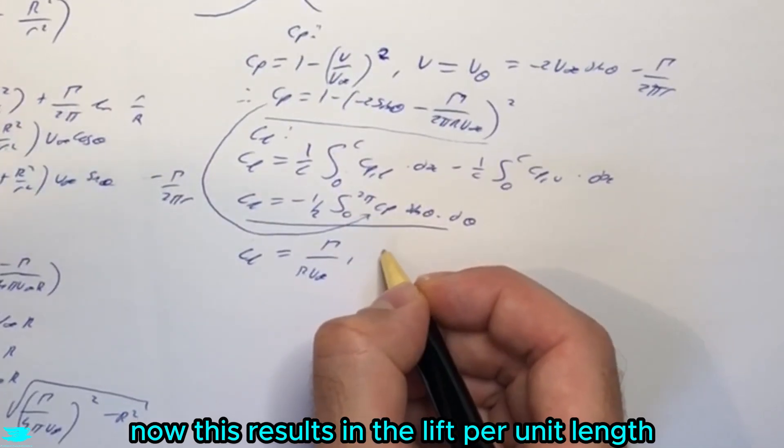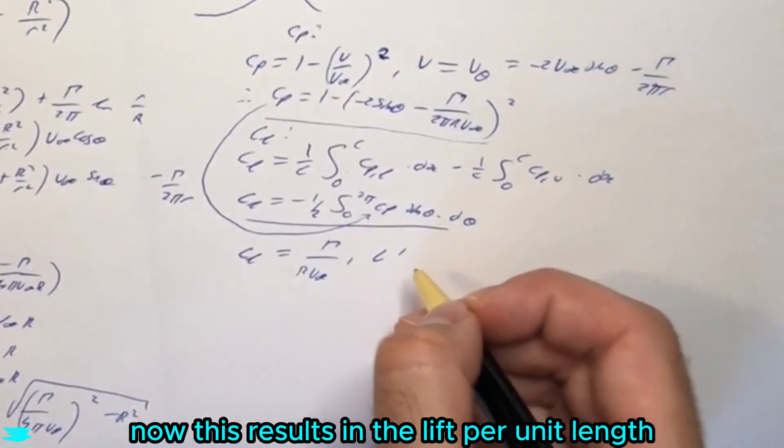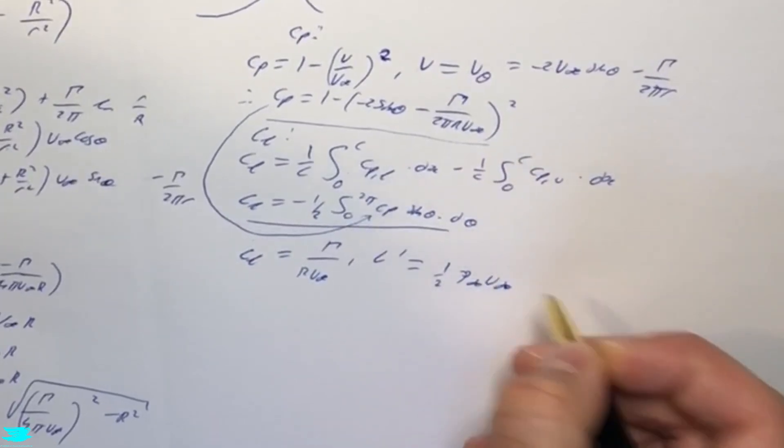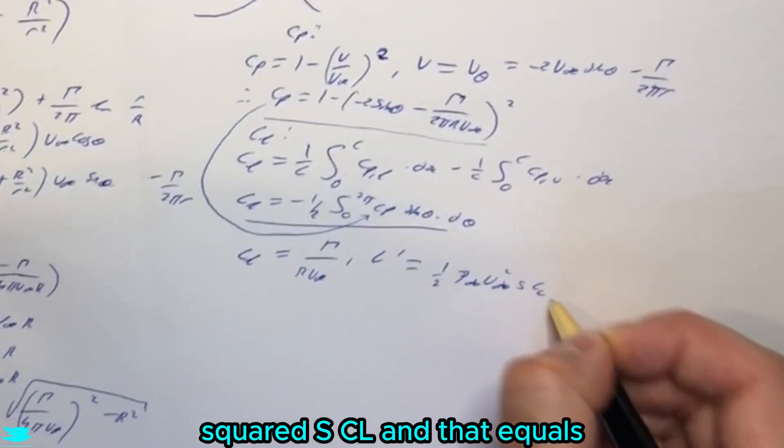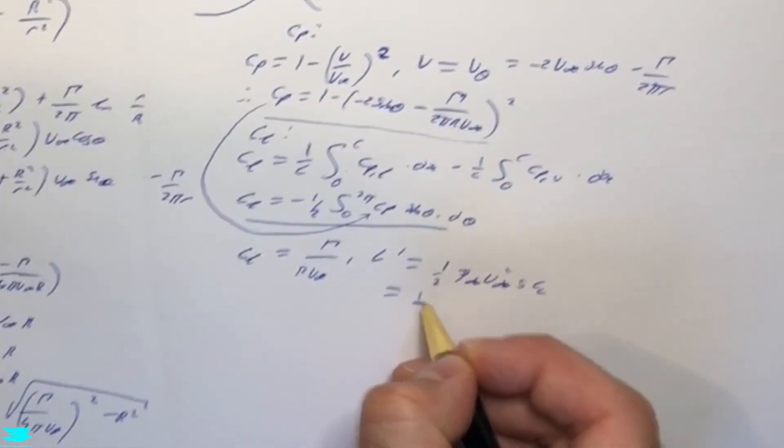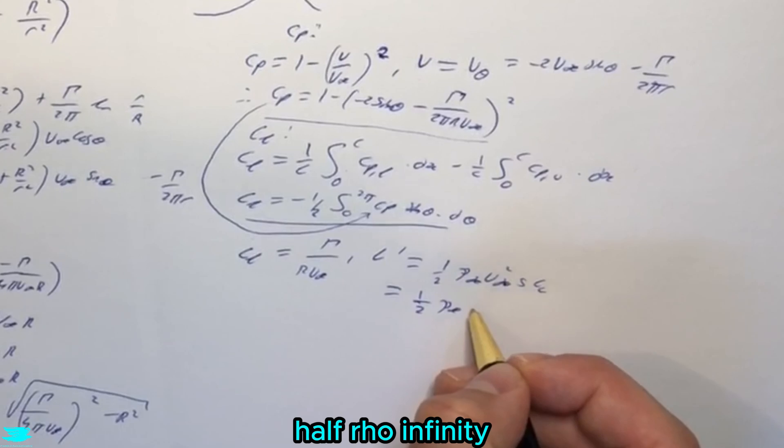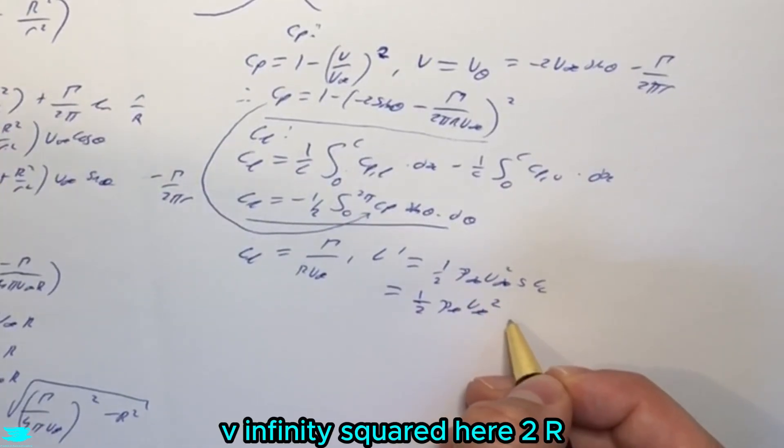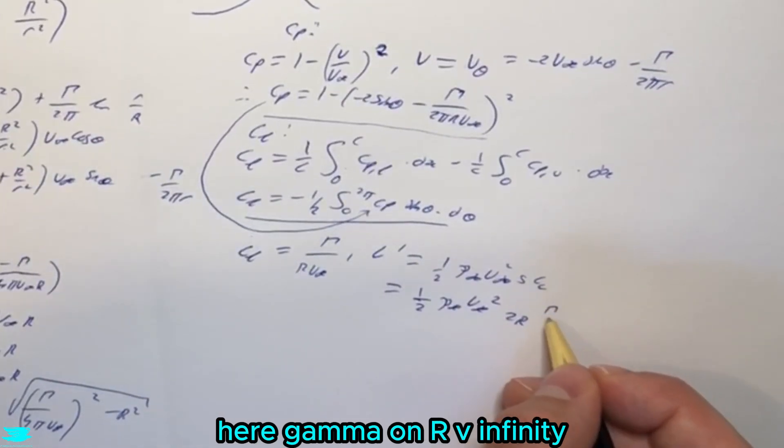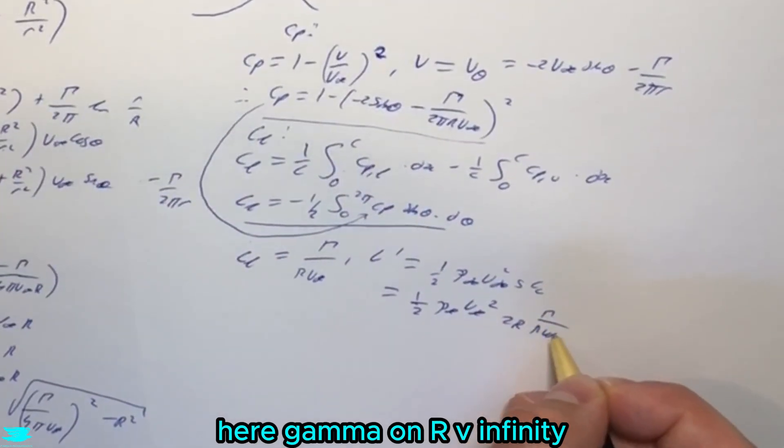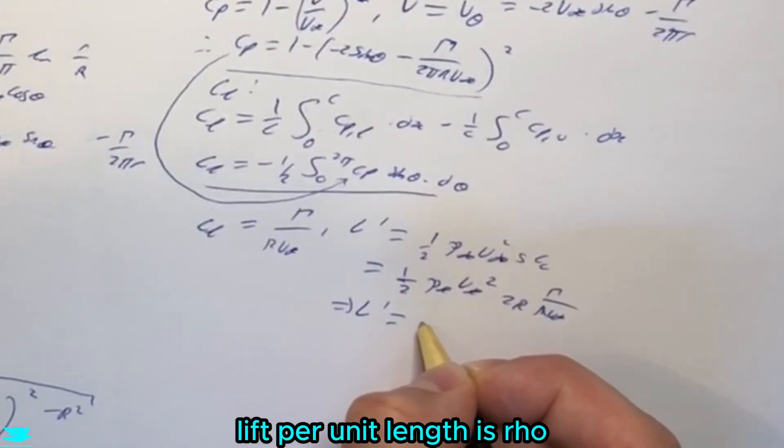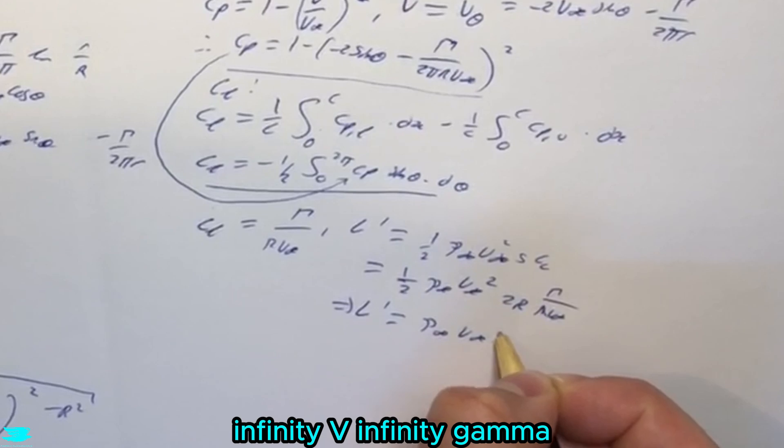Now, this results in the lift per unit length, equals half rho infinity, V infinity, squared, S, CL. And that equals, half, rho, V infinity, rho, V infinity, squared here, 2R, 2R is the equivalent of S for a cylinder here, gamma on R, V infinity. And that results in, the lift per unit length is, rho infinity, V infinity, gamma.